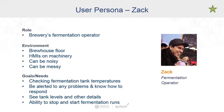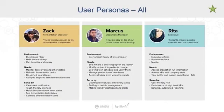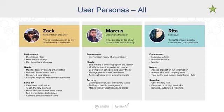Going through Zach's persona, we note his role as a brewery fermentation operator. His environment is the brew house floor — there are HMIs on the machinery, it can be noisy and messy, and he's probably wearing gloves. He cares about checking fermentation tank temperatures, being alerted to any problems and knowing how to respond, seeing tank levels and other details, and having the ability to stop and start fermentation runs. As you interview different groups of users, you'll build out other personas. Here we have three full personas, each representing a different group of users with different needs. Your personas can be as simple as a Word doc or a sticky note — the point is, each persona will use the system in a unique way, so you need to ensure our project has the content which allows each of them to solve their problems and a way to get to that content.